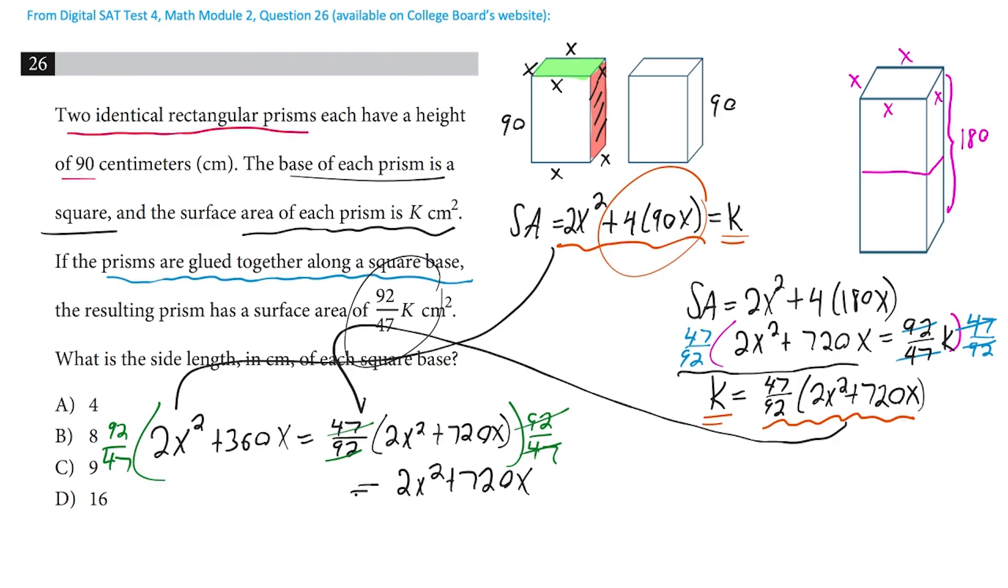And now here, we've got the 92 over 47 times the 2x squared. And then we've also got that same thing, 92 over 47 times 360x. So we're just imagining what would happen if we distributed from here to here and from here to here.